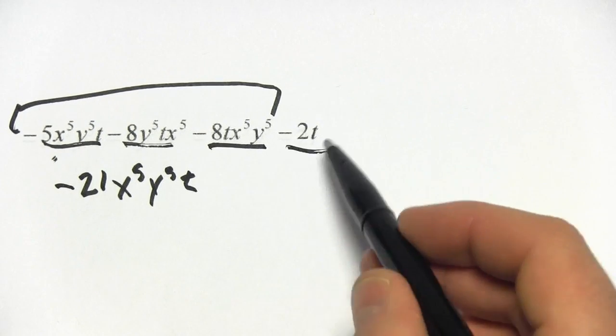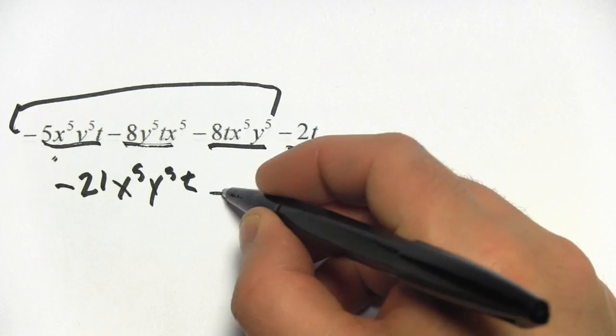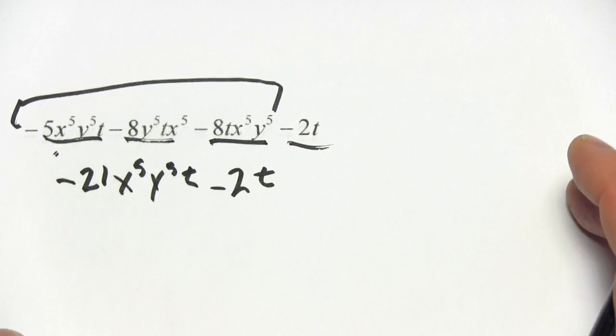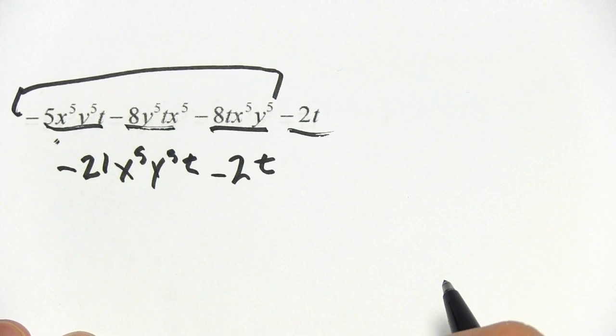And then what's left over is just this negative 2t. There's nothing to combine it with. So we just tack it on at the end. So that's a little bit of work with combining like terms with exponents.